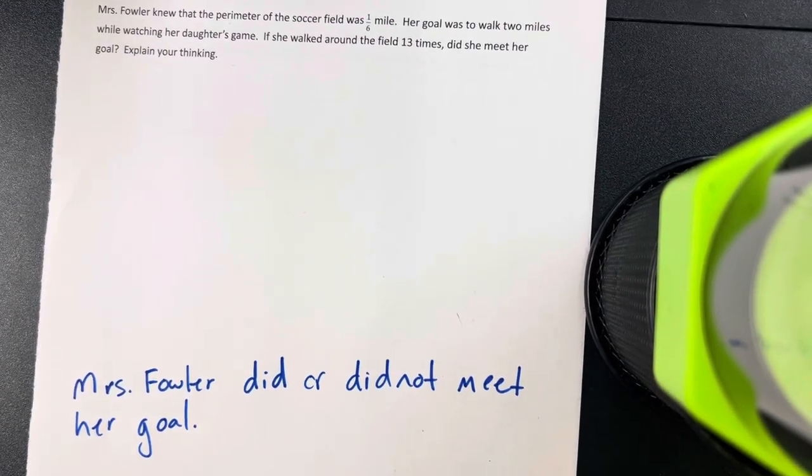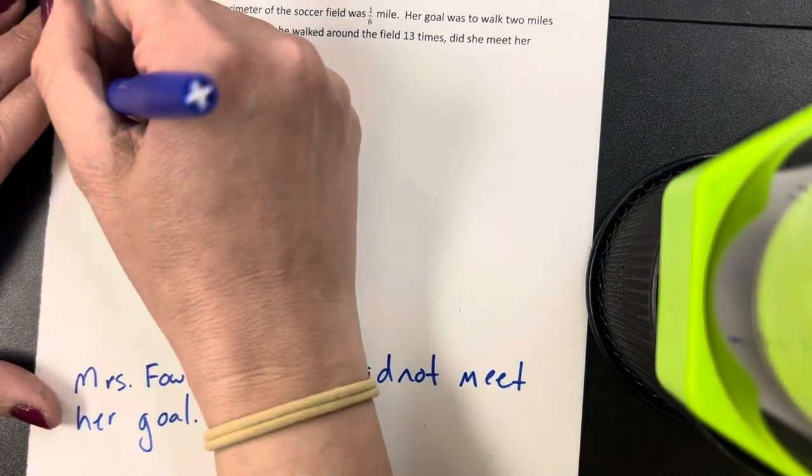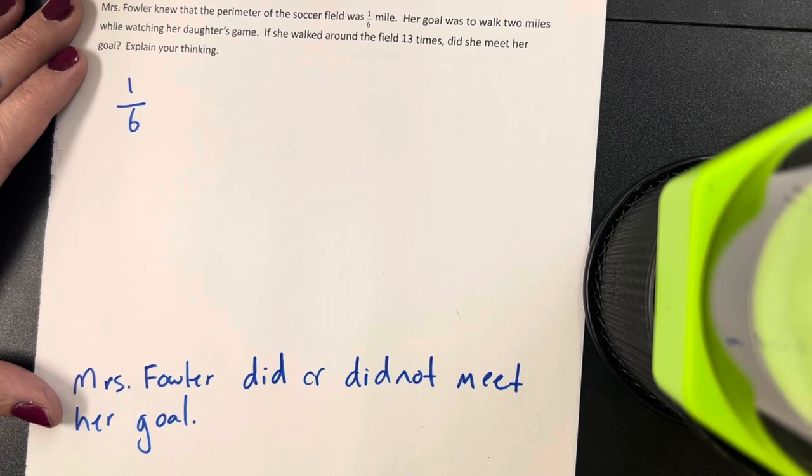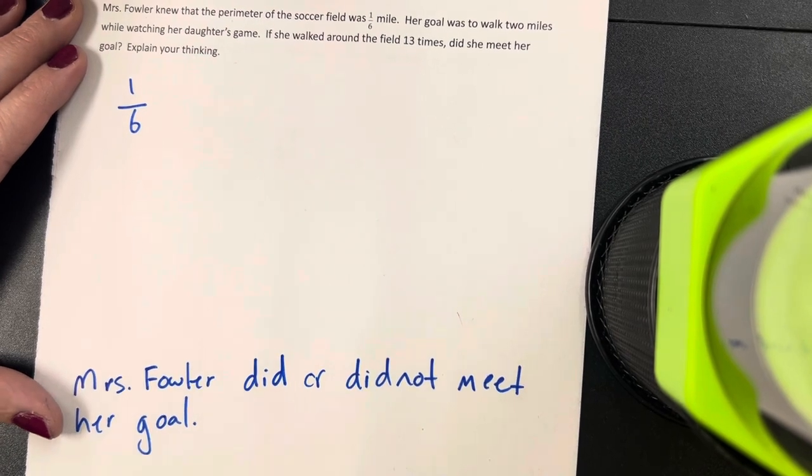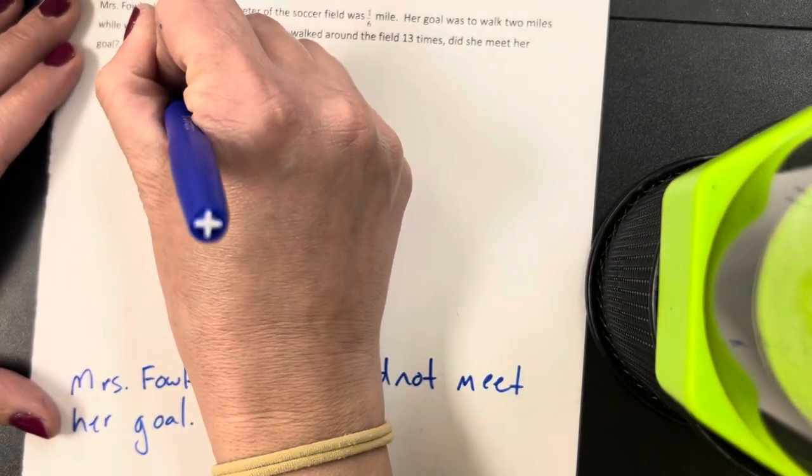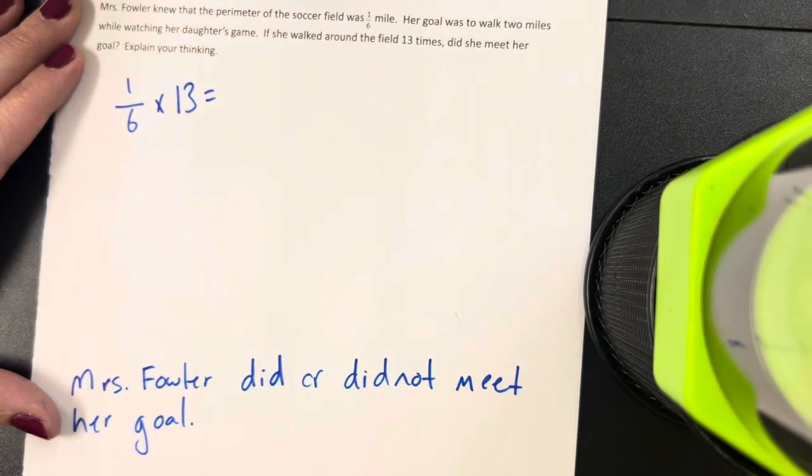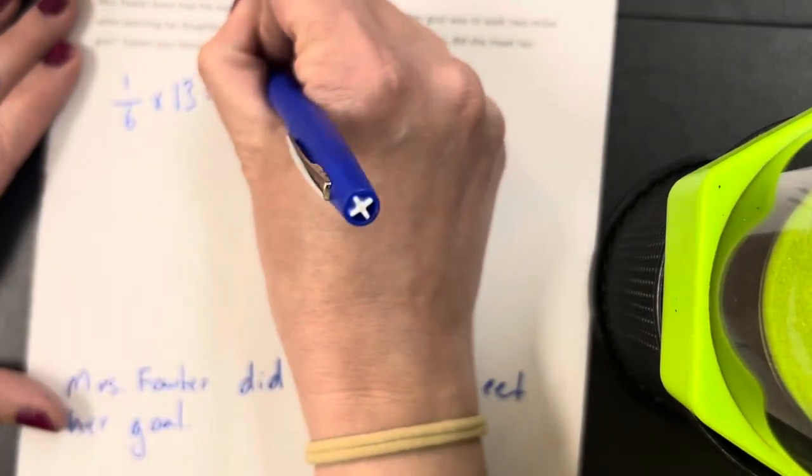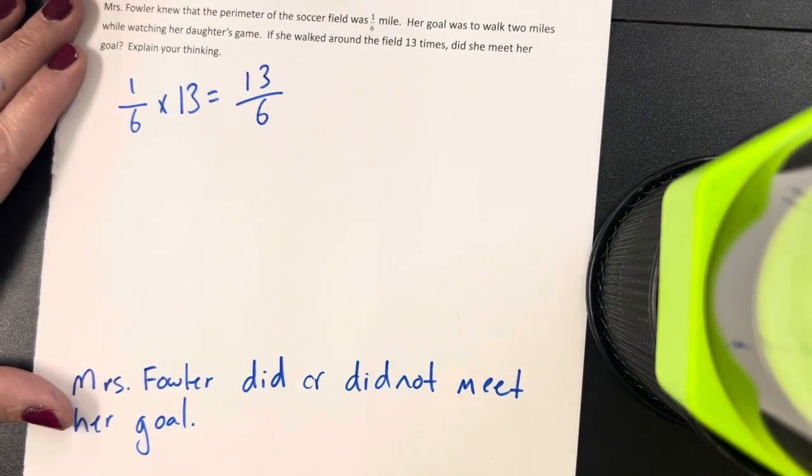Okay, so now we have to solve. We know that the perimeter of the soccer field is one-sixth of a mile. She walked around the field 13 times. So I'm multiplying one-sixth times thirteen. That fraction now turns into thirteen-sixths.